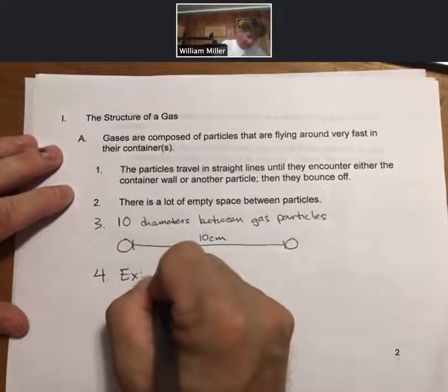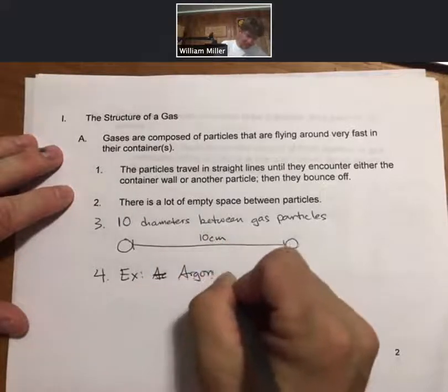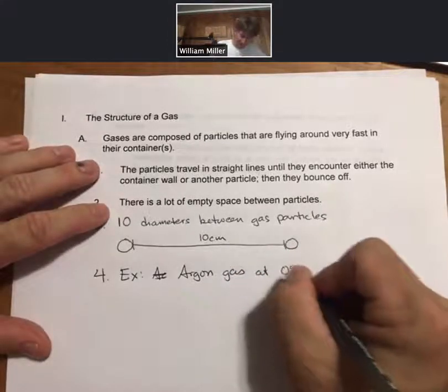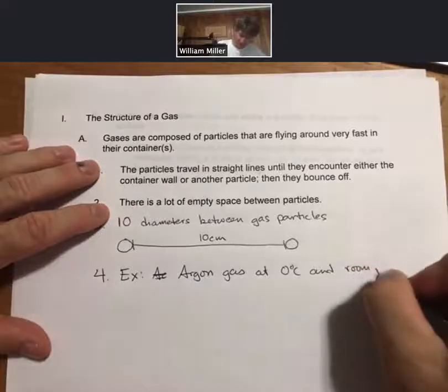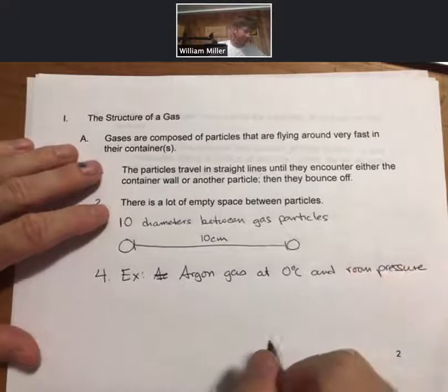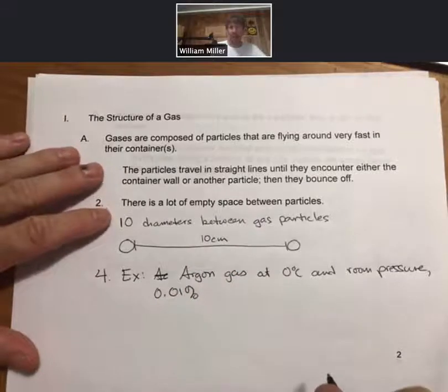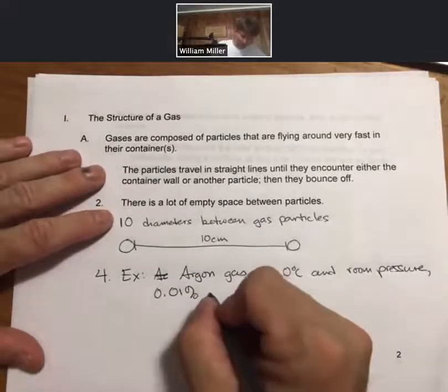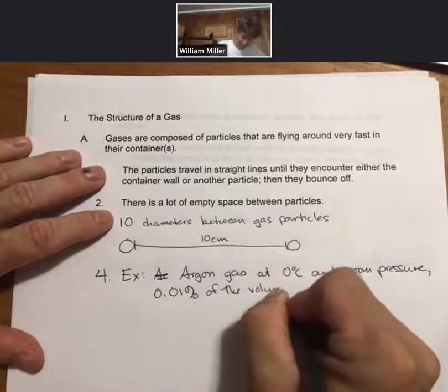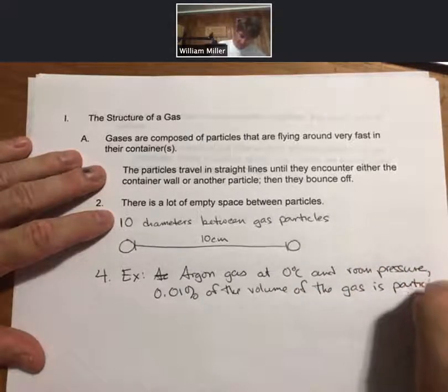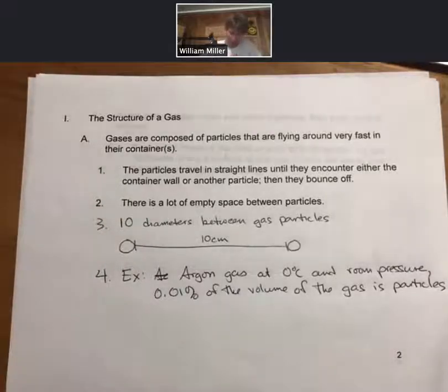For argon gas at zero degrees Celsius and room pressure, which just means the pressure in the room, 0.01% of the volume of the gas is particles. Those could be molecules or atoms, or in this case, since it's argon gas, it would be atoms.